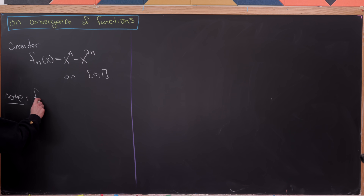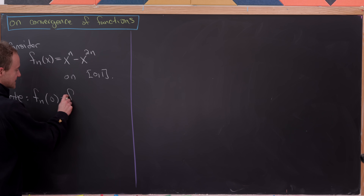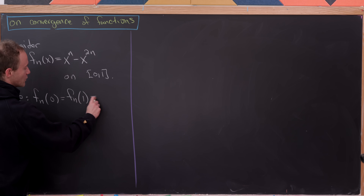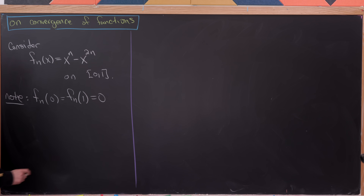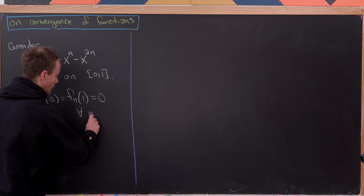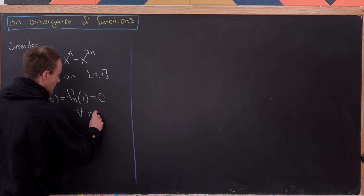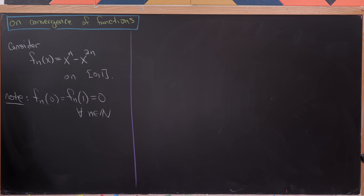Let's observe that f sub n of 0 is the same as f sub n of 1, which equals 0. This is true for all n, because 0 minus 0 is 0, and 1 minus 1 is also 0.